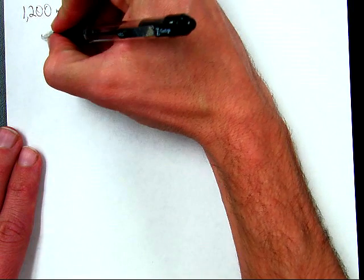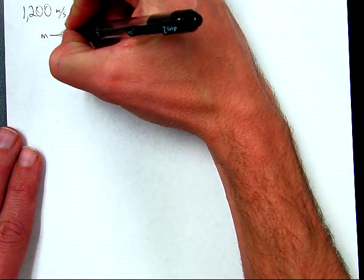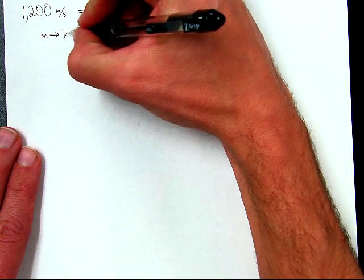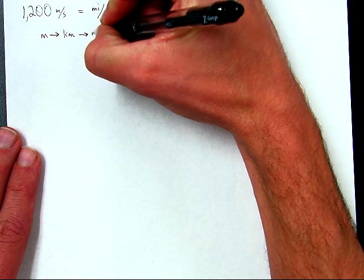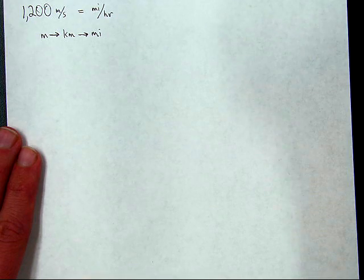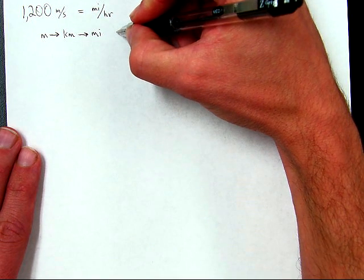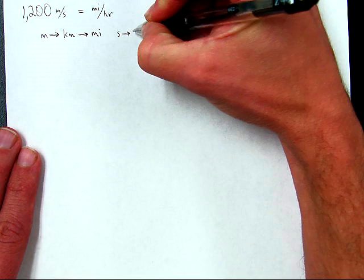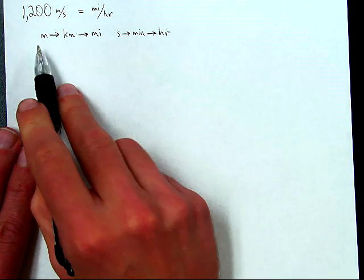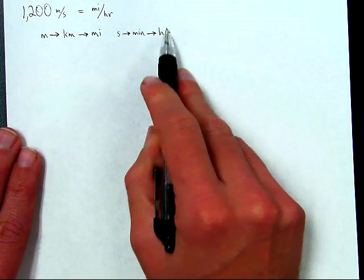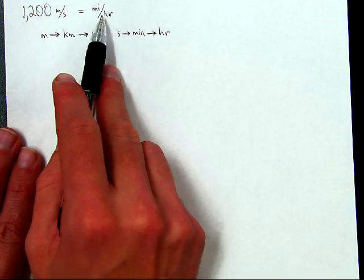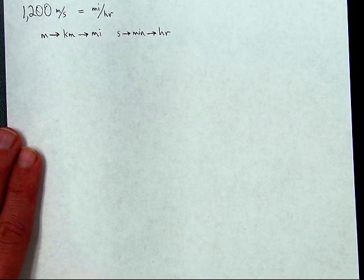So let's see. What's my plan of attack here? I'm going to take meters, and I have no idea how many meters are in a mile, but I could do meters to kilometers and then kilometers to miles. See, those wouldn't be too hard to figure out. And then for the bottom half, I could do seconds to minutes to hours. So that's basically a five-step conversion. That's my plan of attack of how I'm going to get from 1,200 meters per second to some number of miles per hour.